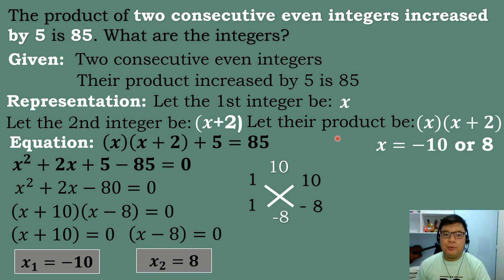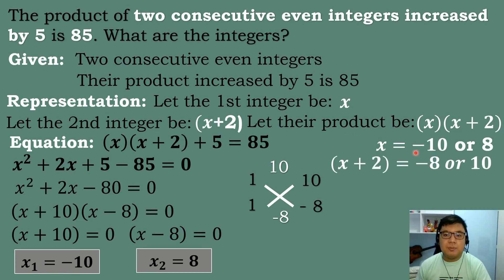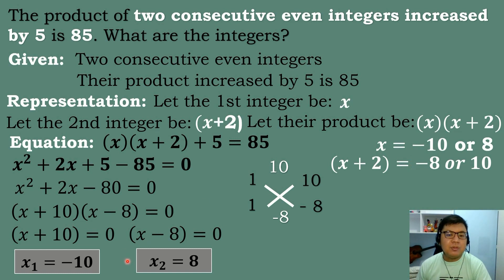We have two possible roots. If the first root is negative 10, then x equals negative 10 is the first integer, and the second integer is negative 10 plus 2 equals negative 8. So one pair is negative 10 and negative 8. If the second root is 8, then the first integer is 8 and the second integer is 8 plus 2, which equals 10.